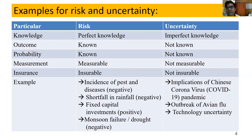For uncertainty, there is imperfect knowledge — for example, if locusts suddenly appear as happened in North Gujarat, we don't know whether they are going to come or not. In terms of outcome: in risk it is somewhat known; in uncertainty, it is not known at all. Probability: in risk it is known; in uncertainty it is not known. Measurement: risks are measurable; uncertainties are not. Insurance: risks are insurable; uncertainties are not.